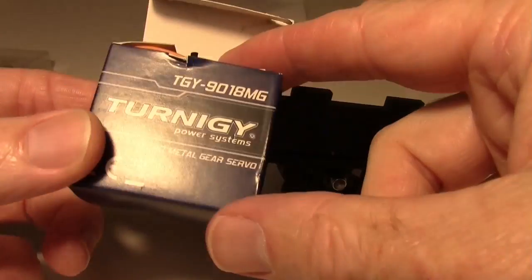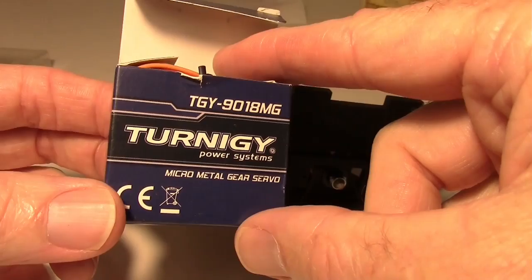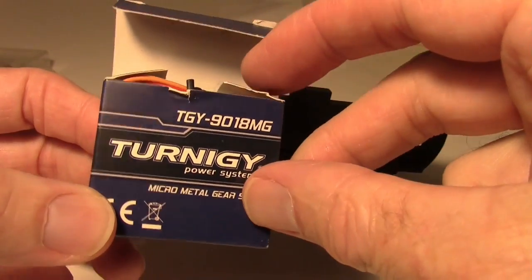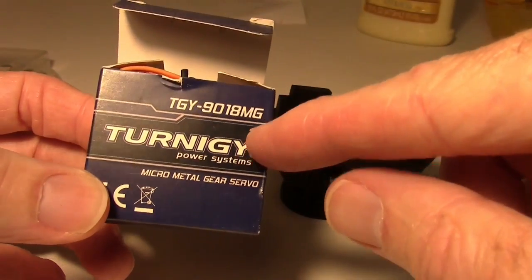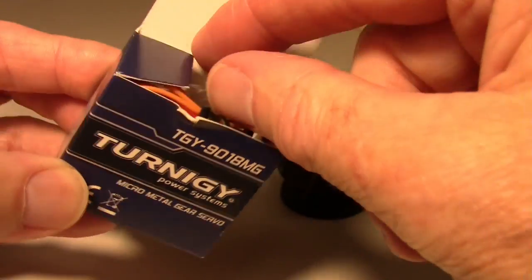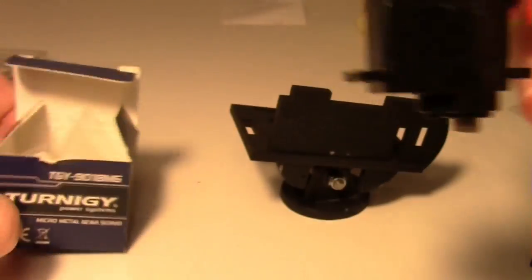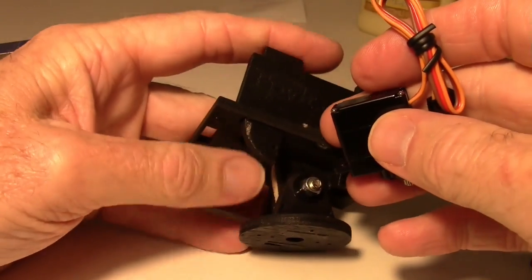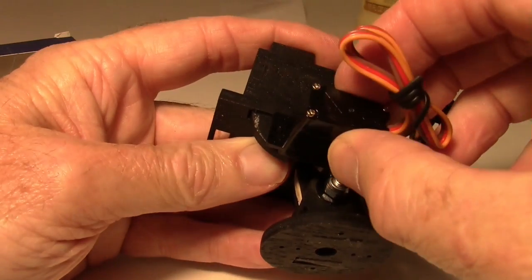Now I plan on using one of these Turnigy Metal Gear servos. And there's the part number for it. I think it's 9 grams and it's a Metal Gear servo. It's just about the right size to fit right on there.